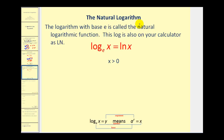The second log the calculator has is the natural logarithm. The logarithm with base e is called the natural logarithmic function. This log is also on your calculator as capital L, capital N. So you won't see log base e of x — it's written LN(x). Remember, e is an irrational number similar to pi, except it's approximately equal to 2.718.